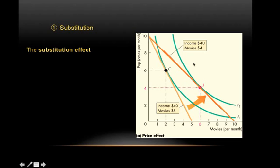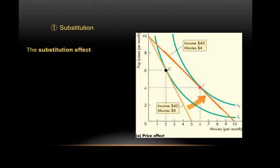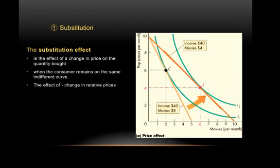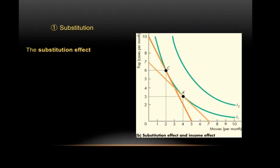Since movies are now cheaper, Maya has more income because she's spending less on movies — there's more income left over that she can spend on either movies or pop. To isolate the substitution effect, we take away the increase in income that occurs as a result of this price fall. When we take away the income she has gained, we take her back to the original indifference curve. That budget constraint shifts parallely down — a parallel shift — and you move to a point on the old indifference curve I1. So this move from point C to K is the substitution effect.